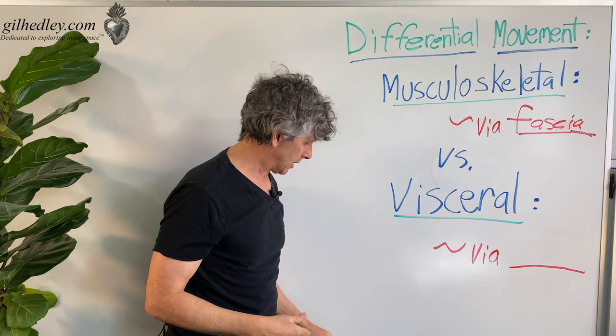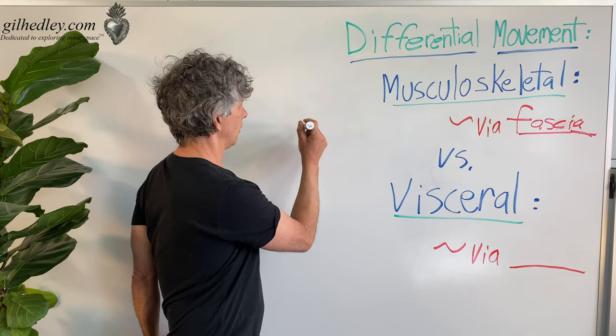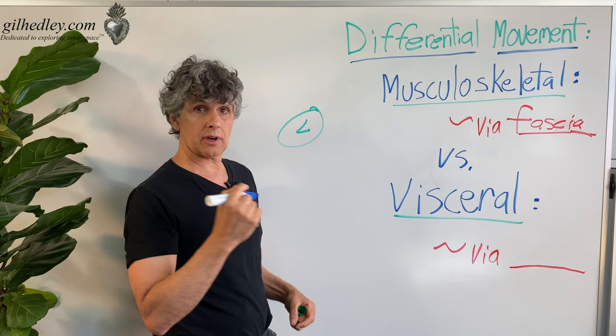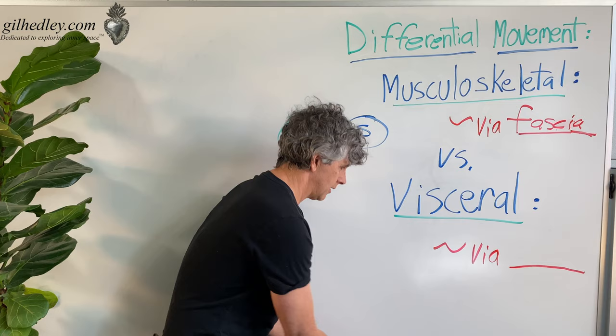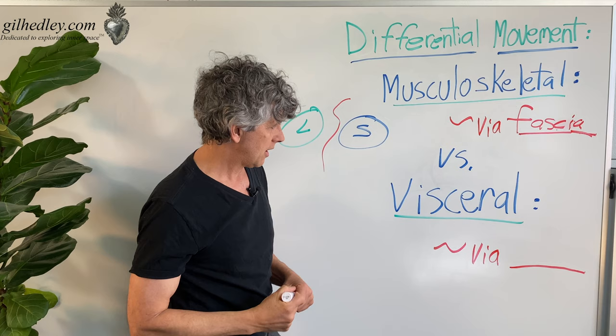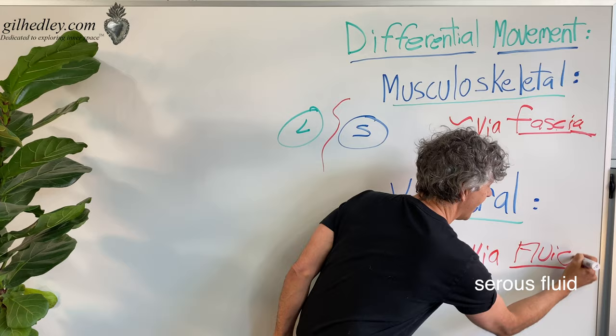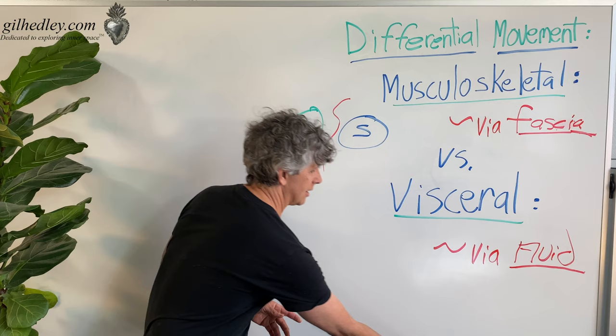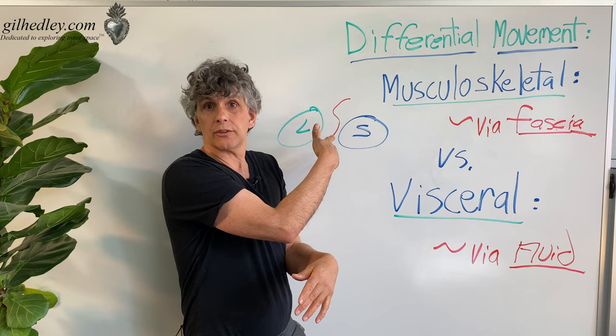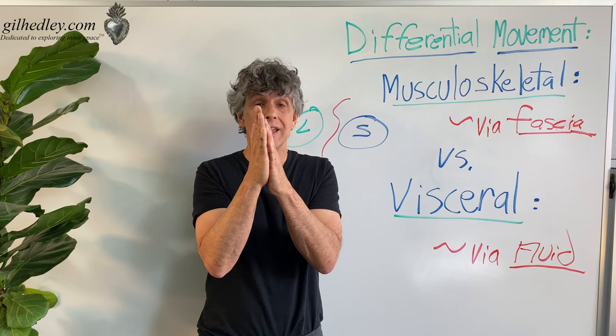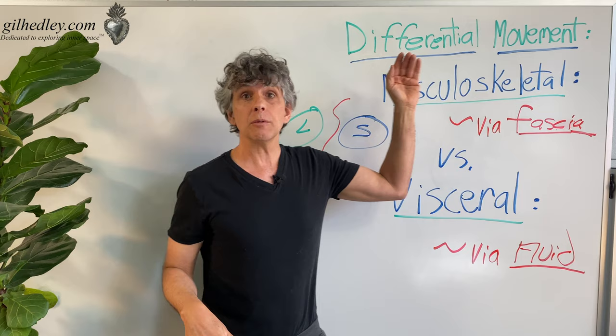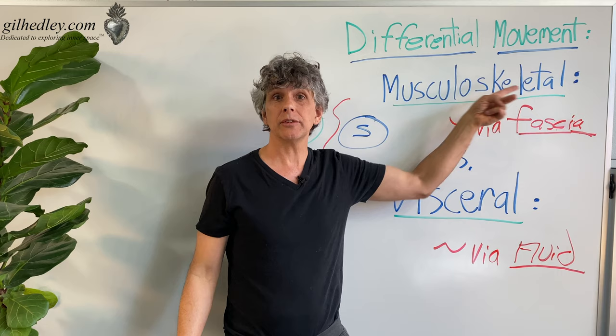That's how differential movement can happen inside of your visceral spaces. We've got a liver, we've got a stomach, and in between the two we've got fluid — serous fluid. The serous fluid enables the close relationship of your organs. There's no space between them — just the skin of each organ and the fluid in between them that allows them to slide and glide relative to each other. So differential movement in your body: nature solves the problem in two ways — one by fascia in the musculoskeletal system, and the other by fluid in your visceral system. And it's what enables us to get up and go.